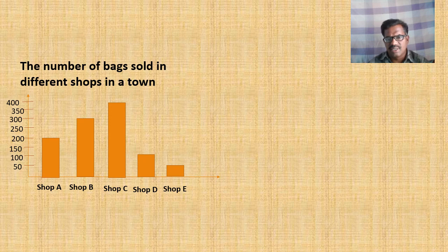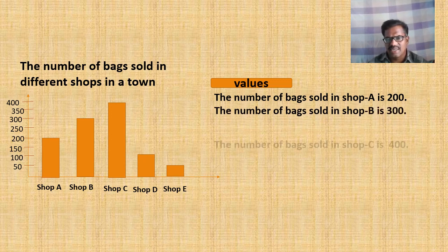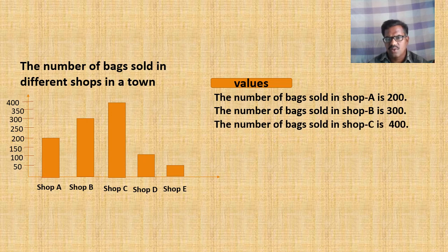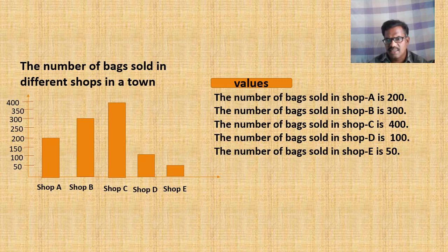As the third part of the description we can write the values the diagram shows. The number of bags sold in Shop A is 200. The number of bags sold in Shop B is 300. The number of bags sold in Shop C is 400. The number of bags sold in Shop D is 100. The number of bags sold in Shop E is 50. As the third paragraph we can make the students write all the values the diagram shows.